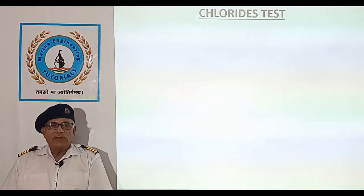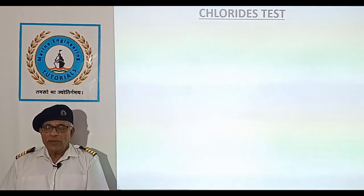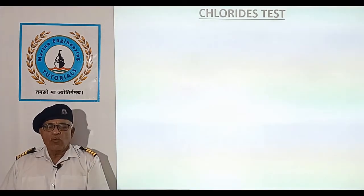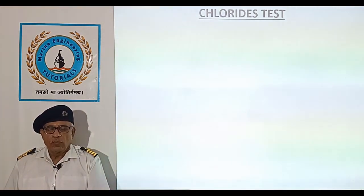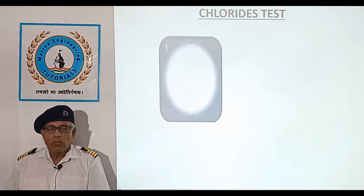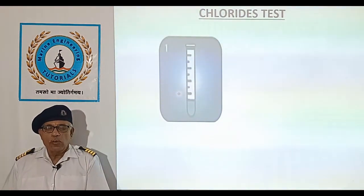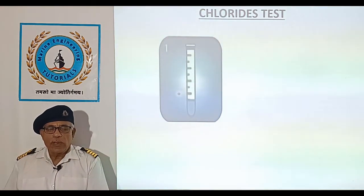Chlorides Test. The following procedure is used to find chlorides in boiler water. Measure 2 millilitres of cooled boiler water sample into a glass tube.